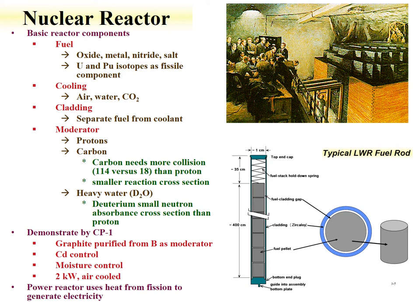Examples of moderators include protons in light water reactors, and carbon — for instance, the Chicago Pile-1, the first nuclear reactor, used graphite as a moderator. Carbon needs more collisions to bring a neutron to thermal energy than a proton, so it's less effective. However, carbon has a smaller reaction cross-section with neutrons than protons do.